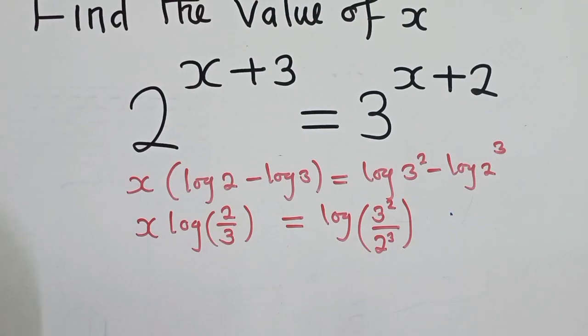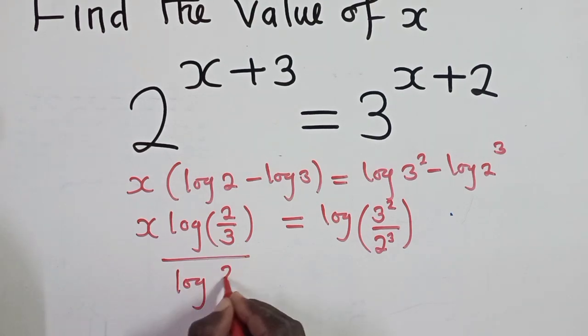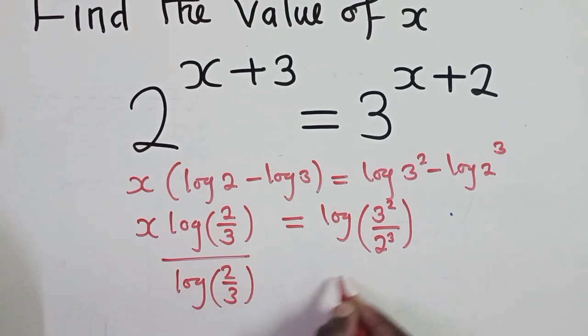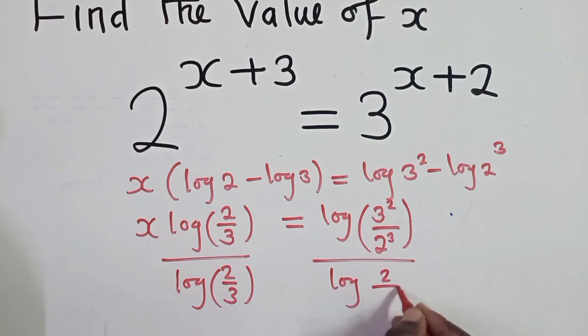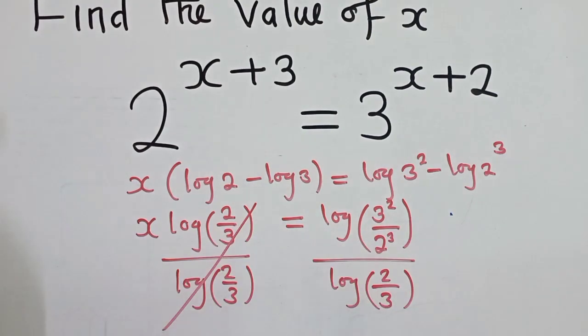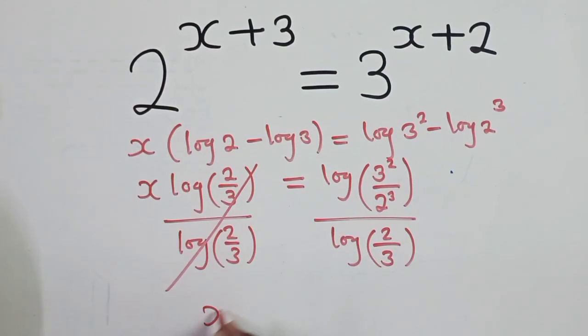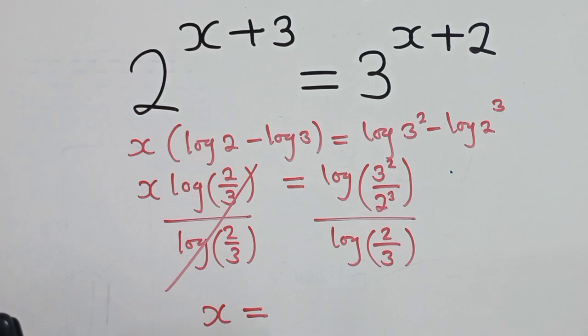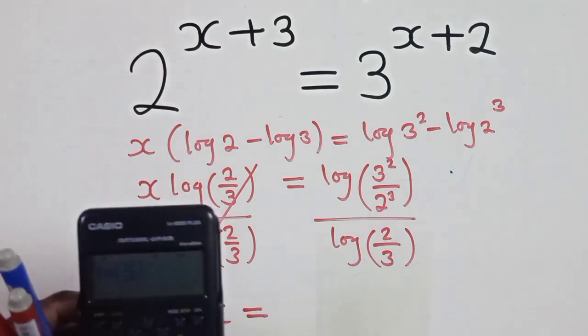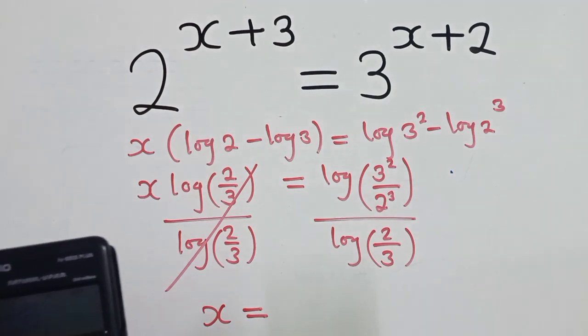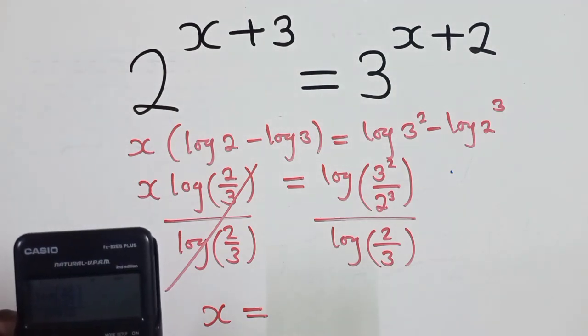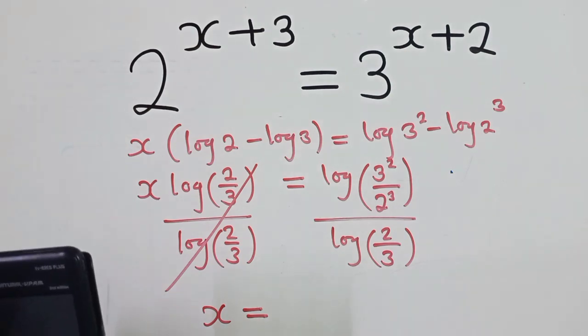So this is what we have. Now, from this stage, we divide by log 2 over 3. This side, we cancel. We shall remain with x is equal to. So now we can punch on our calculator. What is log 3 power 2 over log 3 power 3? Over log 2 over 3 there.